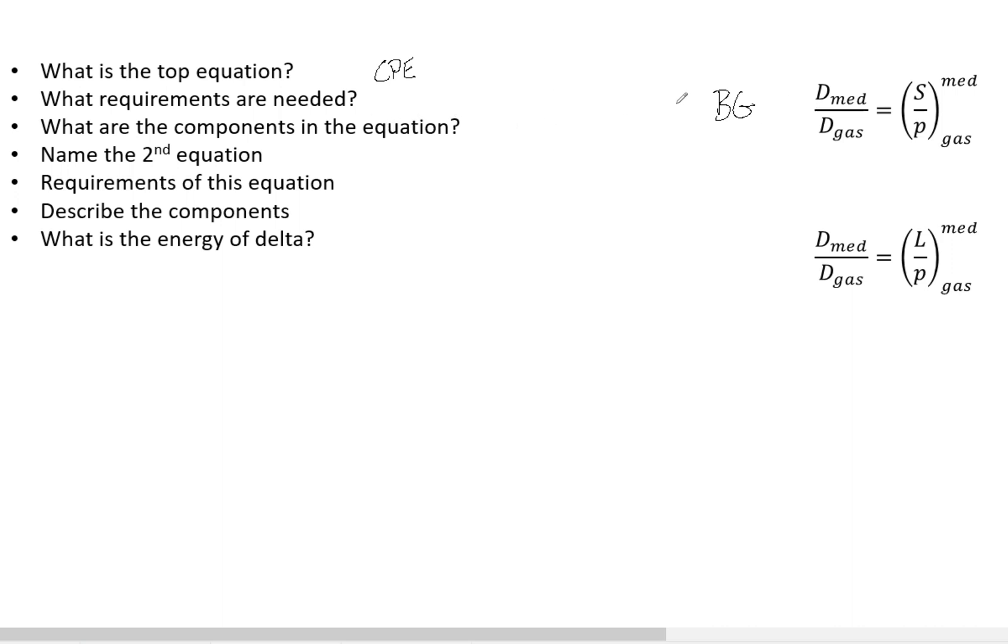So now what are the components? S over rho, that is the mass collisional stopping power. D med here is the dose in medium with the chamber, and then D gas is the dose in the gas of the chamber.